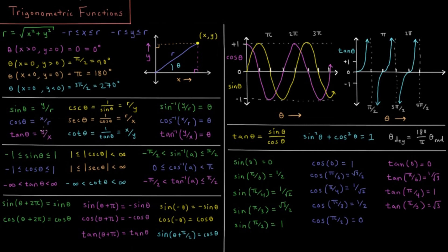There aren't any restrictions about what x and y can be relative to each other — we could be on the plus x axis where y is 0, or on the plus y axis where x is 0. So tangent goes from negative infinity to positive infinity, because x and y are independent of one another. Cosecant is 1 over sine, so it can go from 1 to infinity. Similarly, secant goes from 1 to infinity. And cotangent again has no restrictions on its values.